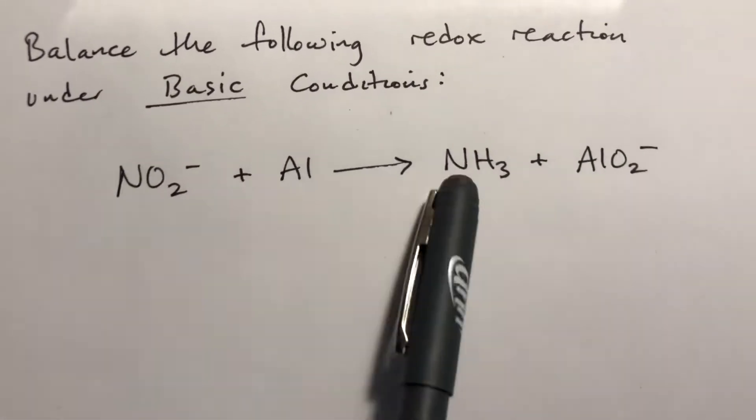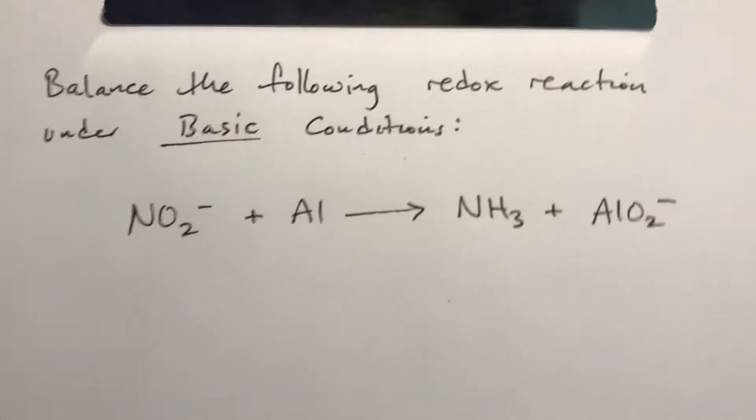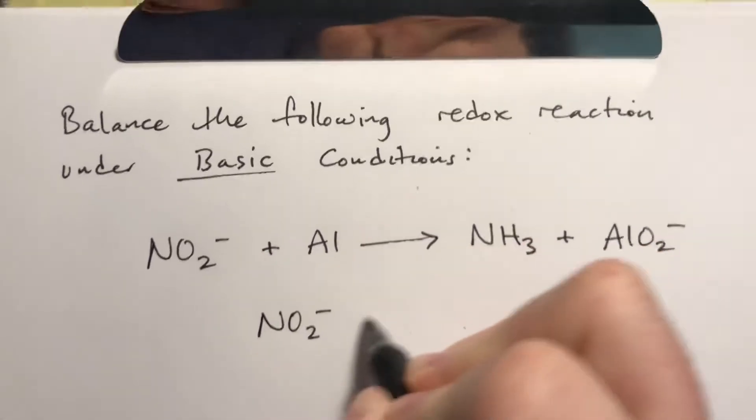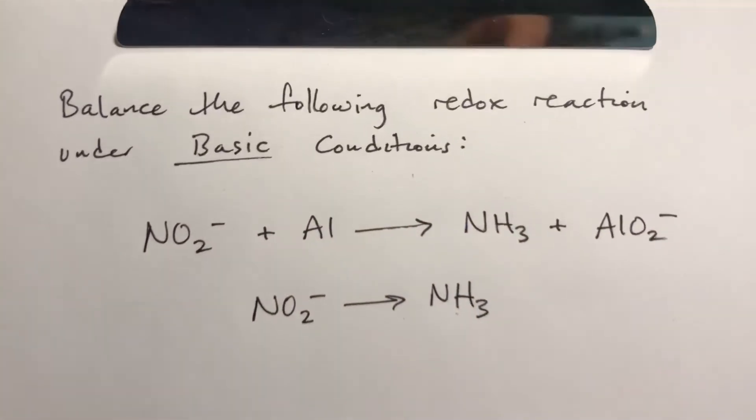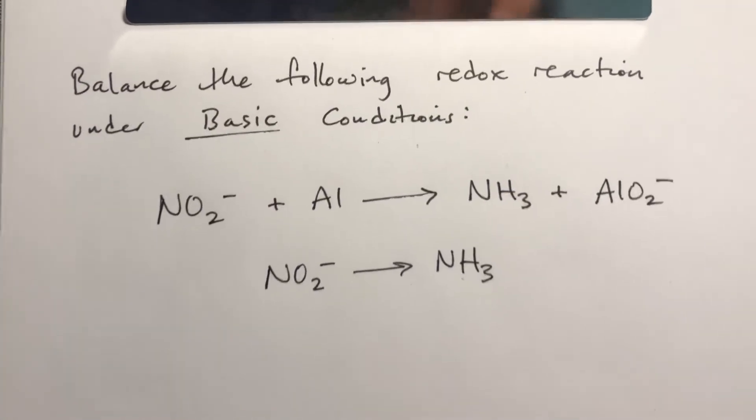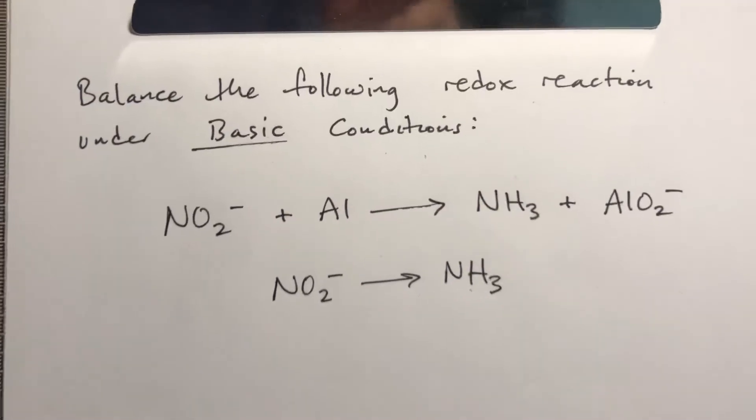Our two half reactions are the two nitrogen compounds or one half reaction in the two aluminum compounds. It doesn't matter which one is which, but we'll figure it out. So we have NO2 minus becoming NH3. We are going to assume that this is acidic conditions. I know it says basic. We're going to assume acidic until the very end.